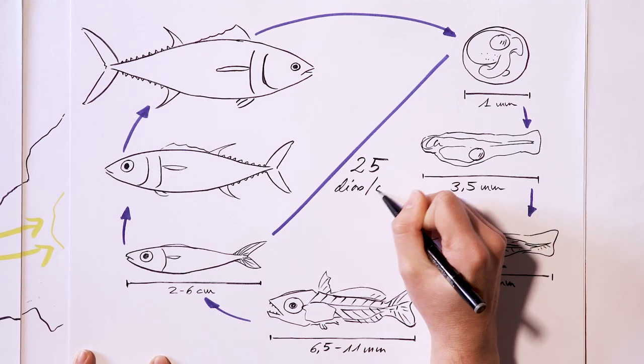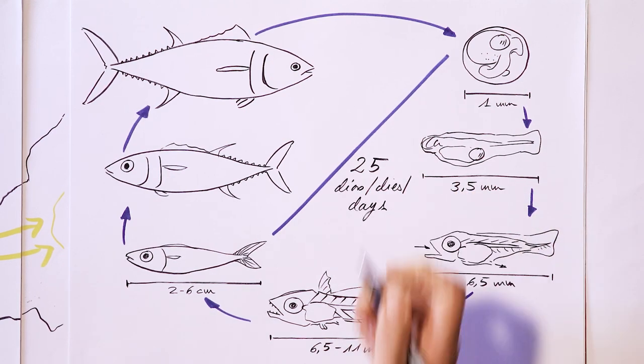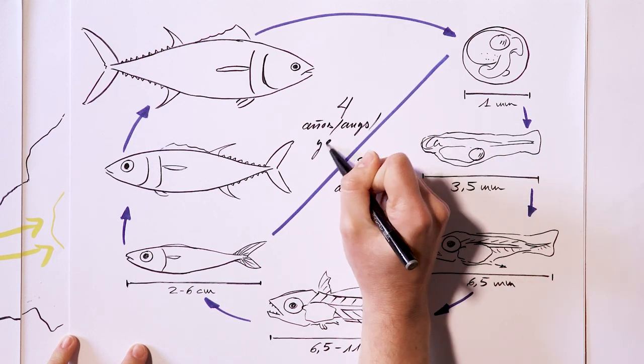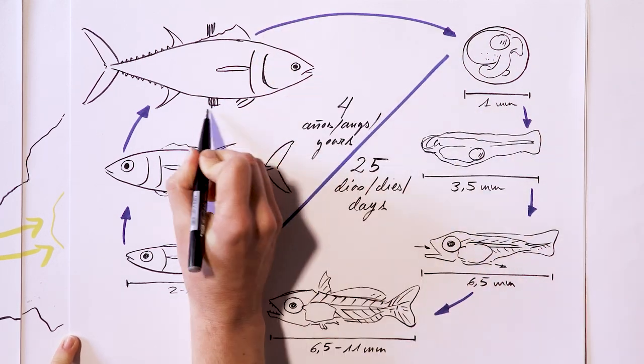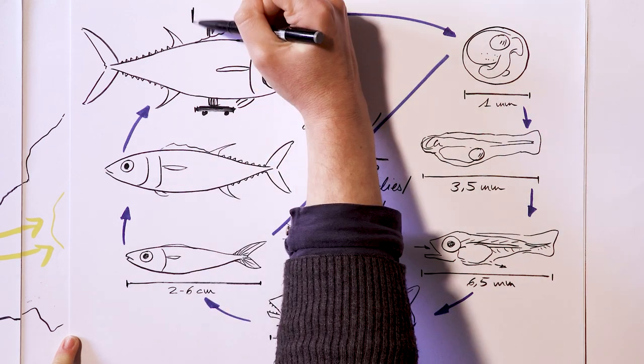As we've seen, the Atlantic bluefin tuna grows very quickly at first, but takes a long time to become a breeding adult. Some other species of tuna are ready to breed when they're only a year old.